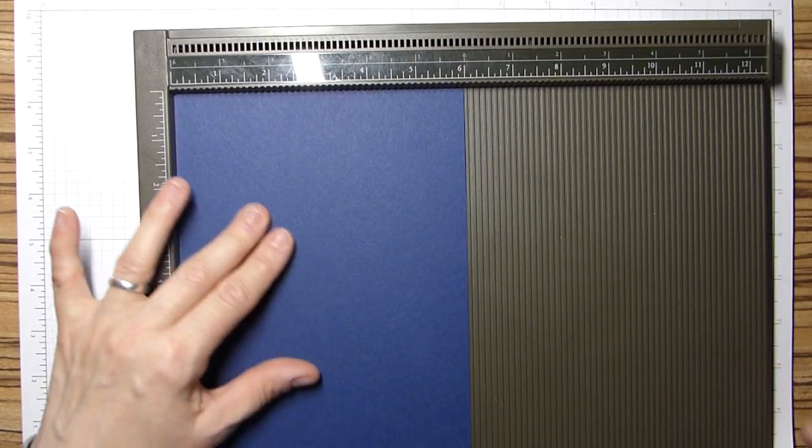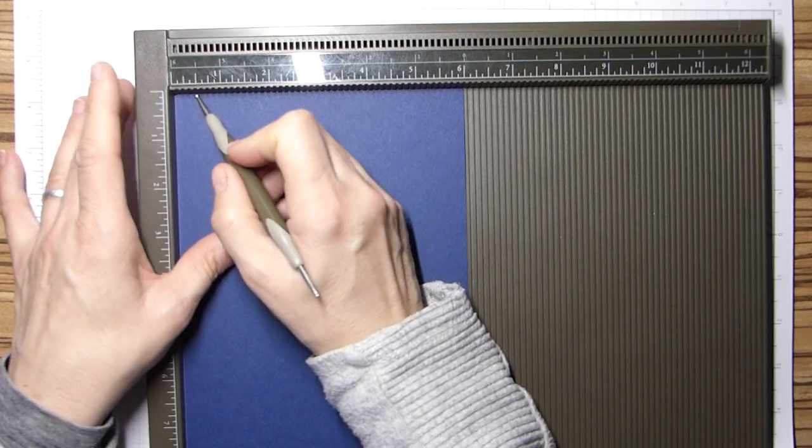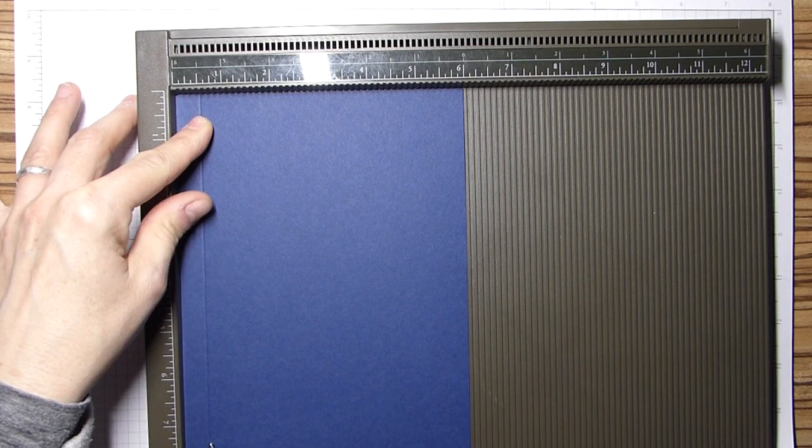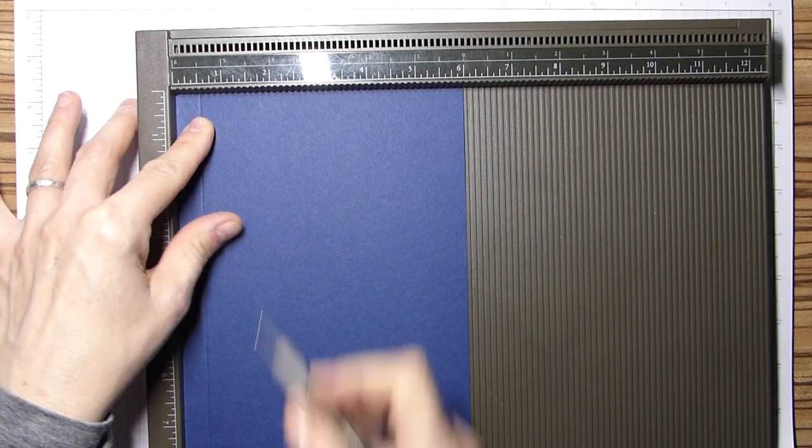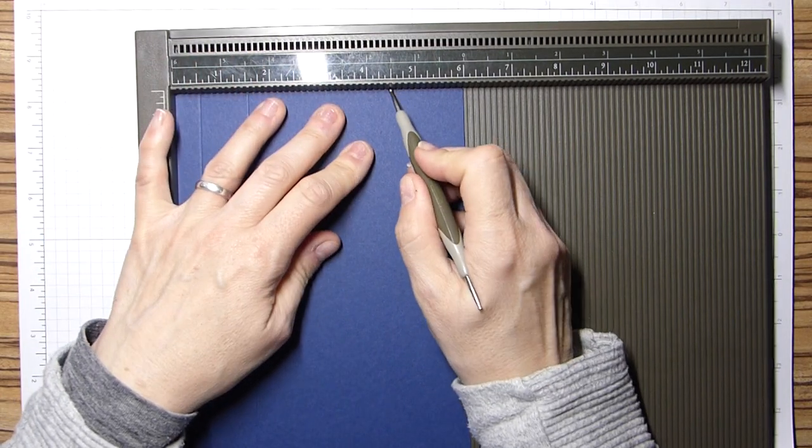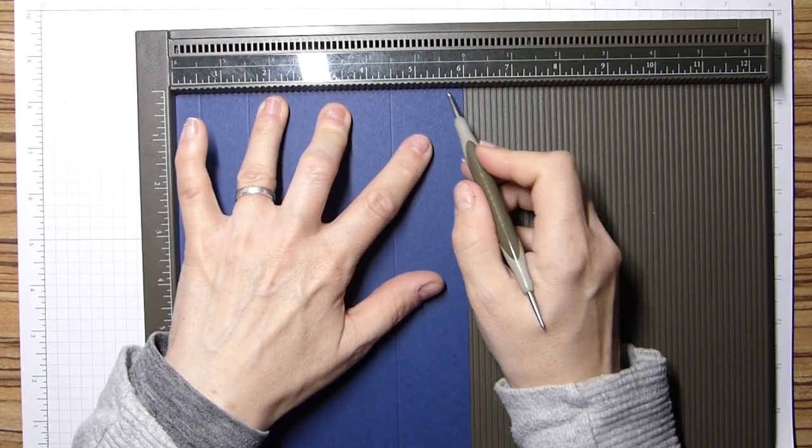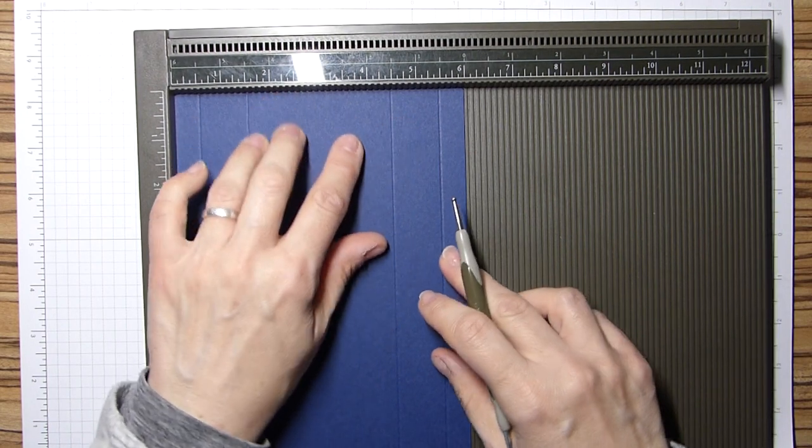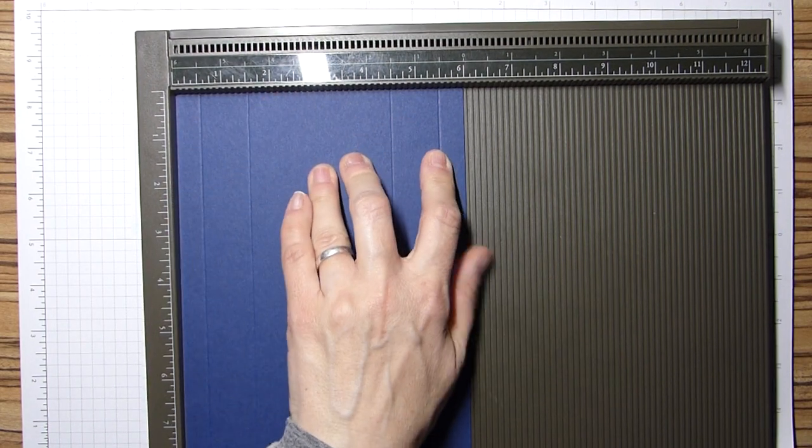On the short side, we're going to score at half an inch, then one and a half, and four and a half, and five and a half. And in centimetres, that will be one and a half and four, eleven and a half and fourteen.